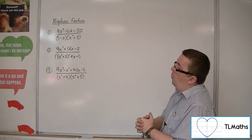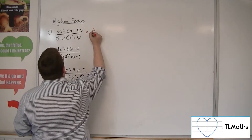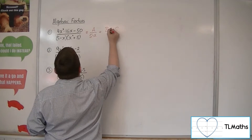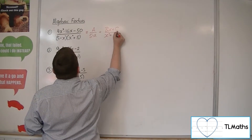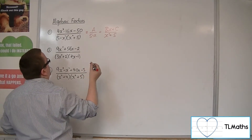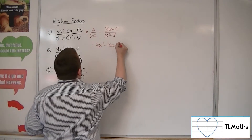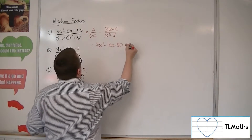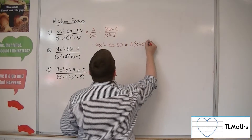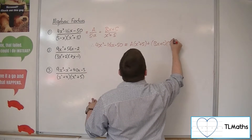Let's start with number 1. We can write this as a over (5 minus x) plus (bx plus c) over (x squared plus 5). If we multiply both sides by (5 minus x)(x squared plus 5), we get 4x squared minus 16x minus 50 equivalent to a lots of (x squared plus 5) plus (bx plus c) lots of (5 minus x).